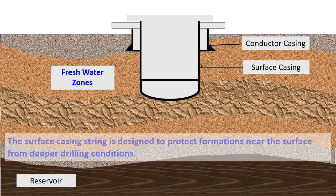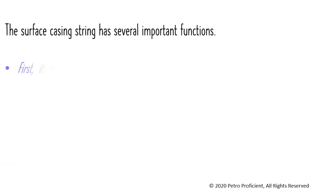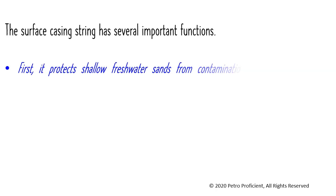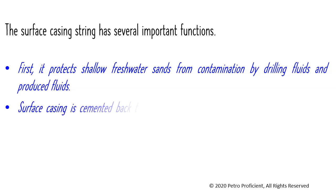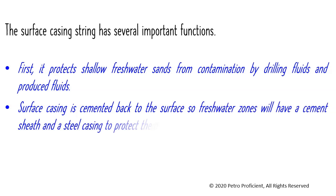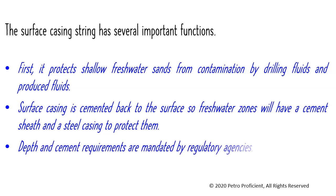The surface casing string is designed to protect formations near the surface from deeper drilling conditions. It protects shallow freshwater sands from contamination by drilling fluids and produced fluids. Surface casing is cemented back to the surface so freshwater zones will have a cement sheath and a steel casing to protect them. Depth and cement requirements are mandated by regulatory agencies. Surface casing allows you to drill to the next casing seat.